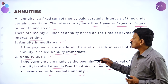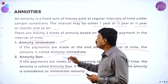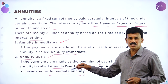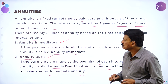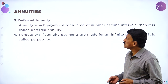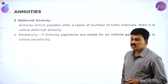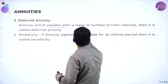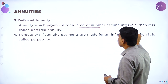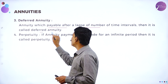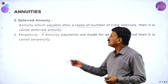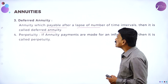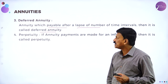In this chapter, we are going to concentrate on problems based on annuity immediate and annuity due. You can expect one 5-mark question from either annuity due or annuity immediate. Deferred annuity means an annuity which is payable after a lapse of a number of intervals of time; it is called deferred annuity.